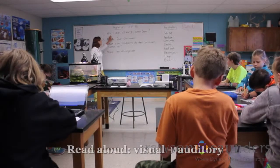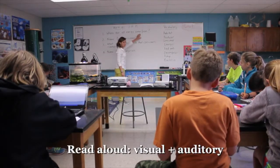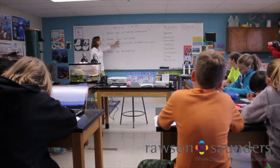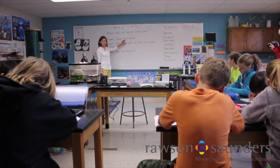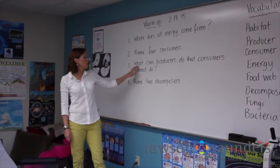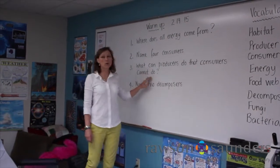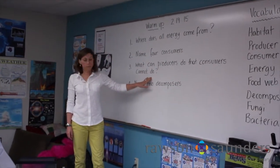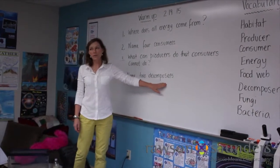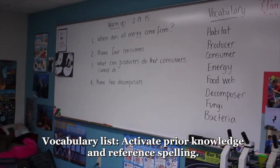First one: where does all energy come from? Number two: name four consumers. Remember consumers? Number three: what can producers do that consumers cannot do? And finally, name two decomposers. There are some words on our word wall over here that might help you. Don't be afraid to look at those.